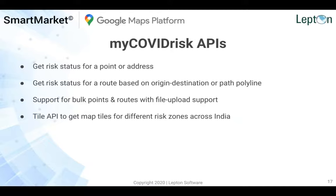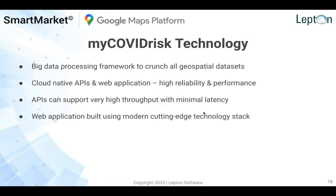The platform enables you to do COVID risk analysis in addition to the other use cases. Specifically, the APIs offered by the platform include: getting risk status for a point or an address; getting risk status for a route based on an origin-destination or path; support for bulk points and routes, where you can upload a file and get the corresponding risk status for each point or route; and a tile API to get map images consumable in any map-centric interface to see risk zones across India. The platform uses a big data processing framework to crunch all geospatial data sets, is hosted completely in the cloud, and supports very high API throughput with minimal latency.